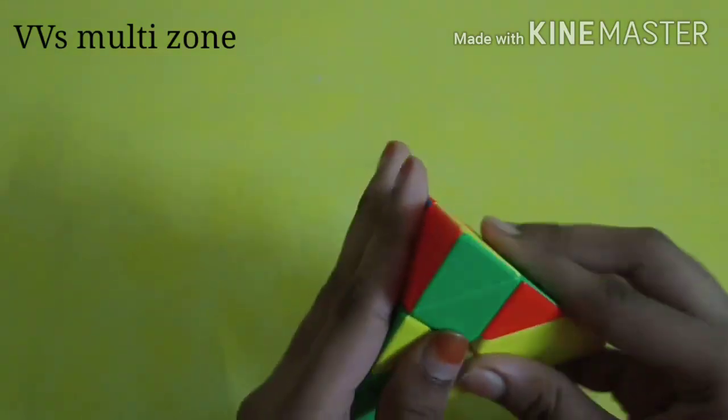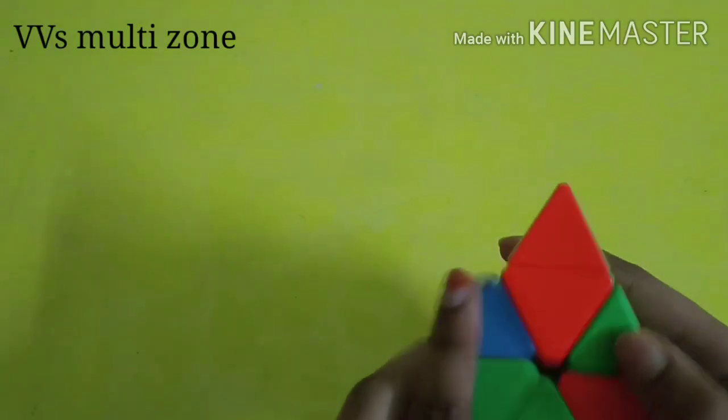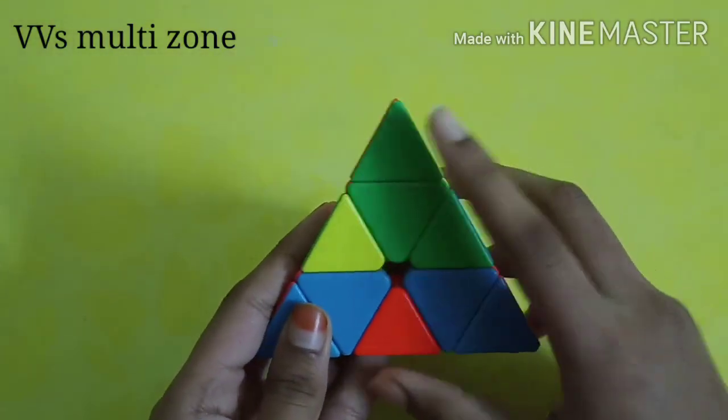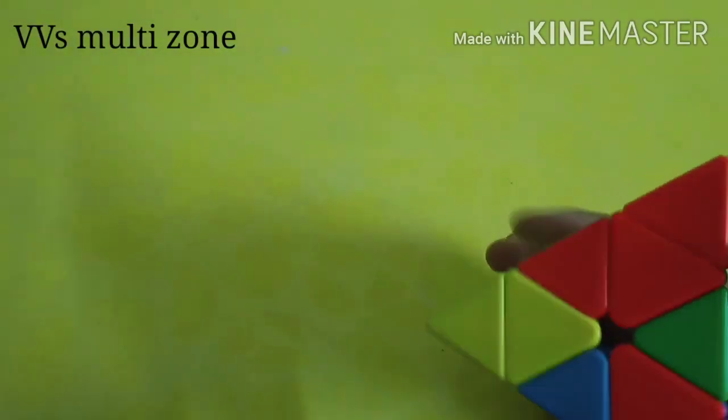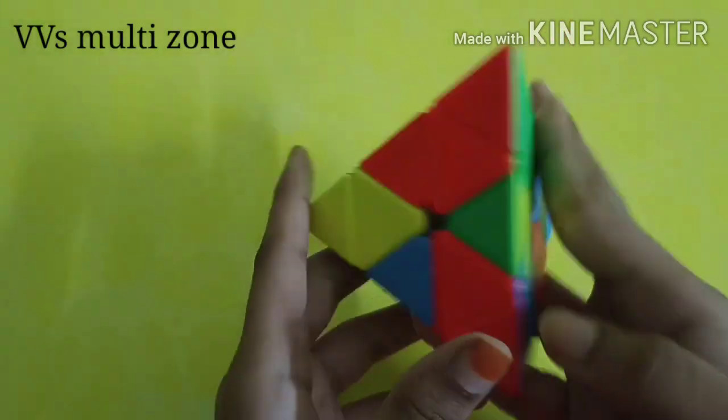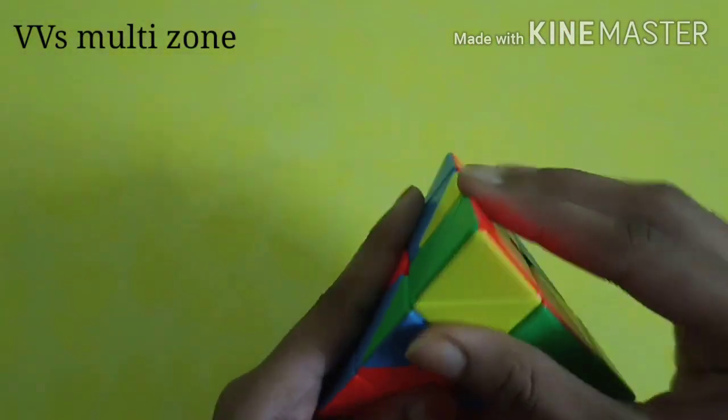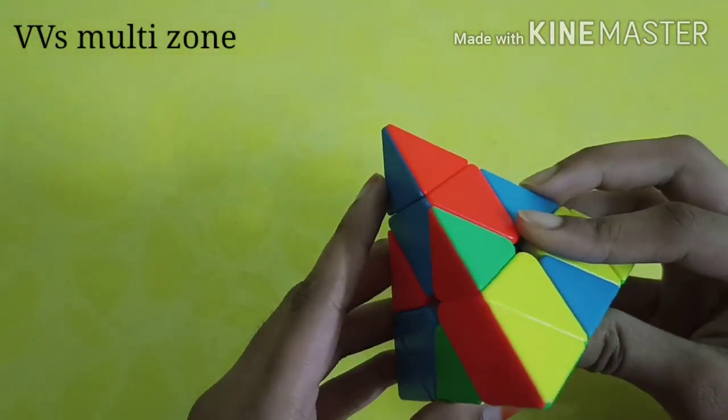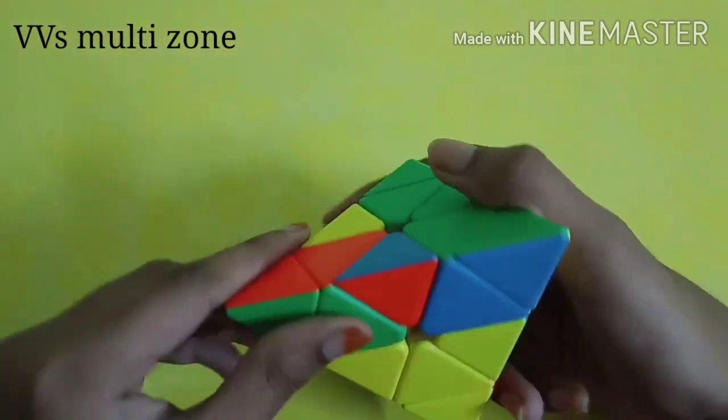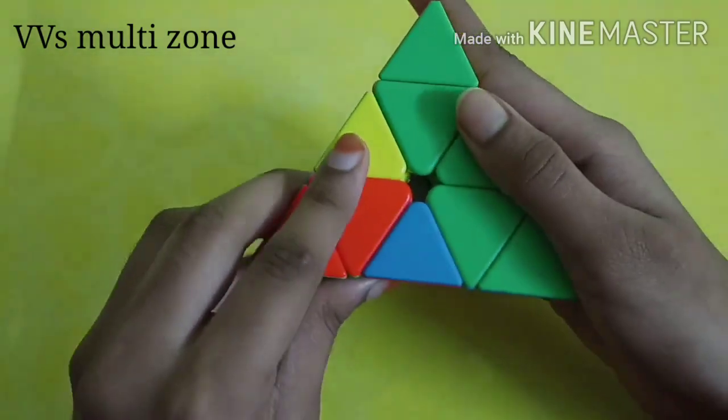Now we have green here and another green here and one more green here. When you have like that, just move this green and we have green here, so just move it up.